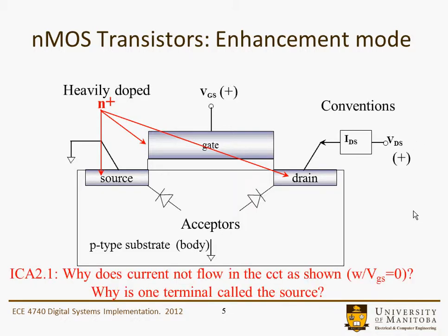In class assignment 2.1: why does current not flow in the circuit as shown with VGS equal to zero? You should be able to answer that by figuring out that one of those diodes present is going to be in reverse bias. You can also answer a follow-up question: why is the terminal called the source, or why is one of those terminals called the drain?